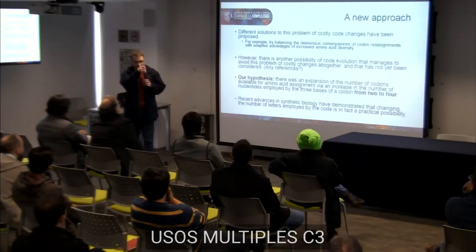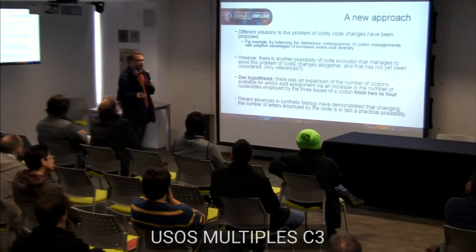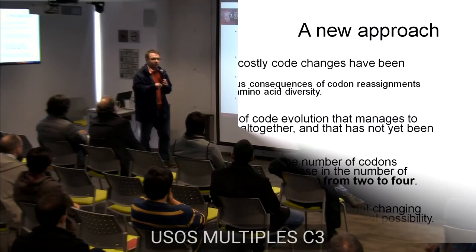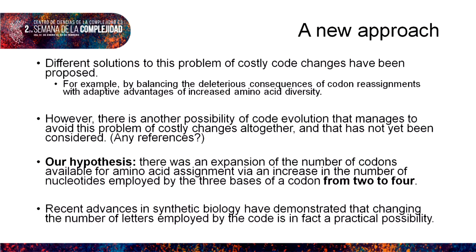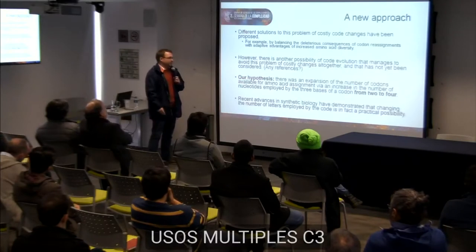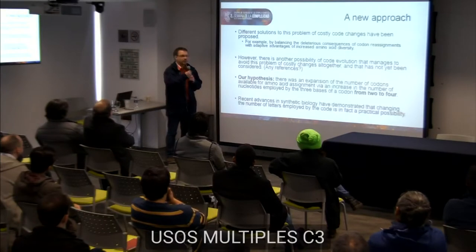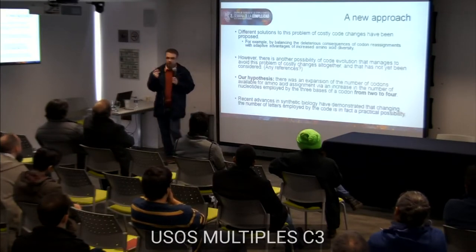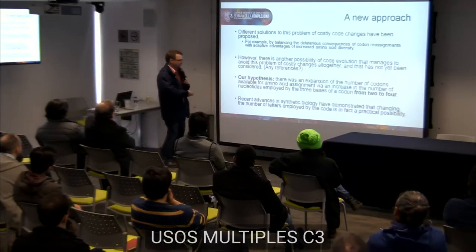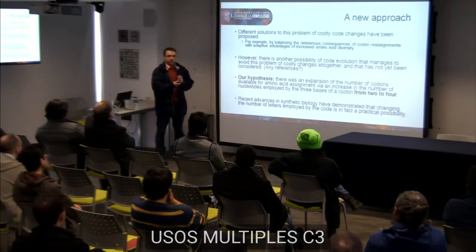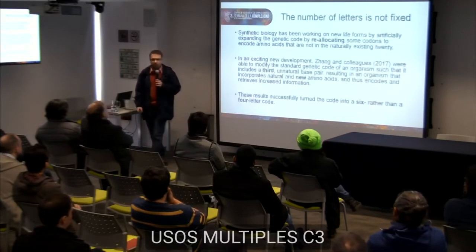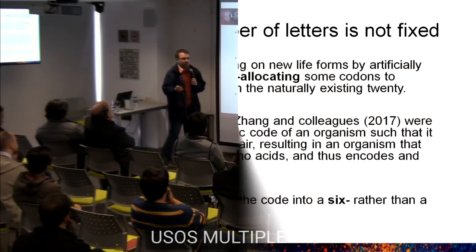Different solutions have been proposed to this problem, but Dr. Frank noticed there could be another possibility with no costly changes at all. Our hypothesis is that there was an expansion of the number of codons available via an increase in the number of nucleotides employed from two to four. In the standard genetic code we have four letters per position in a triplet. Our proposal is that originally there were only two letters per position, and only later was an extra pair of letters added.